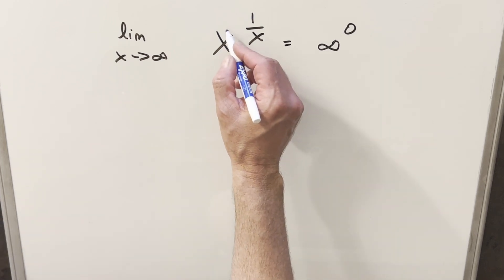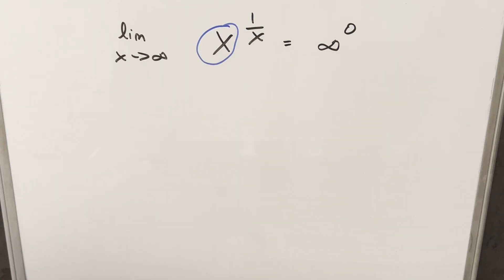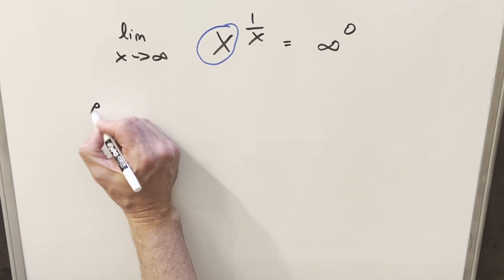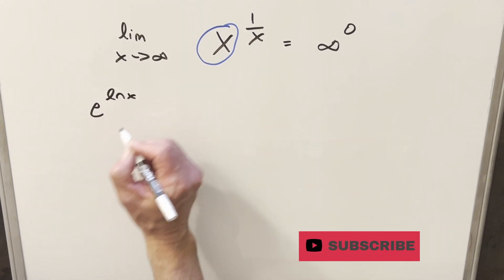So what I need to do is try some algebra to manipulate this. For x in the base, let's get this to be e. Let's force this to be e by rewriting x as e to the ln x.